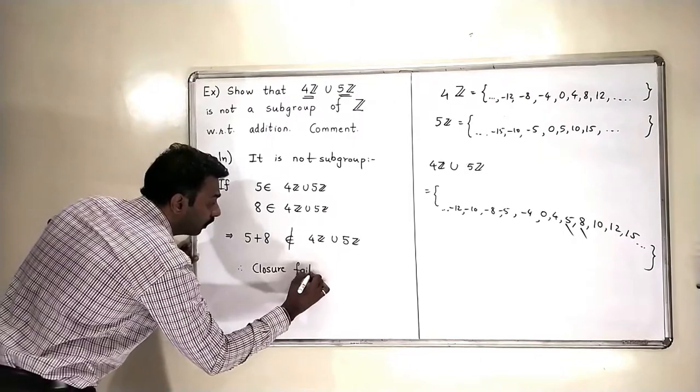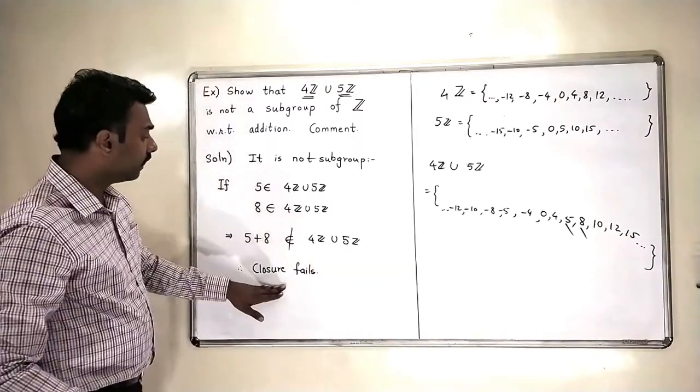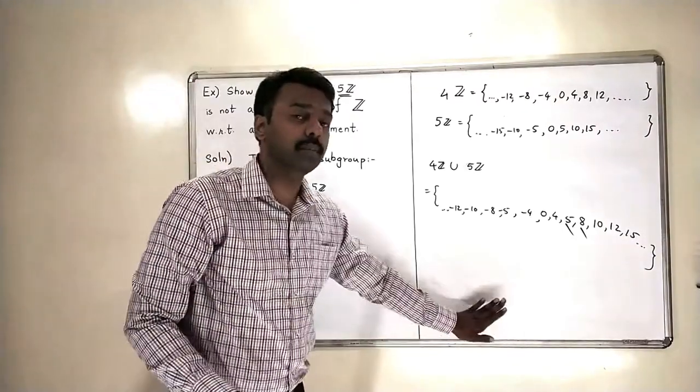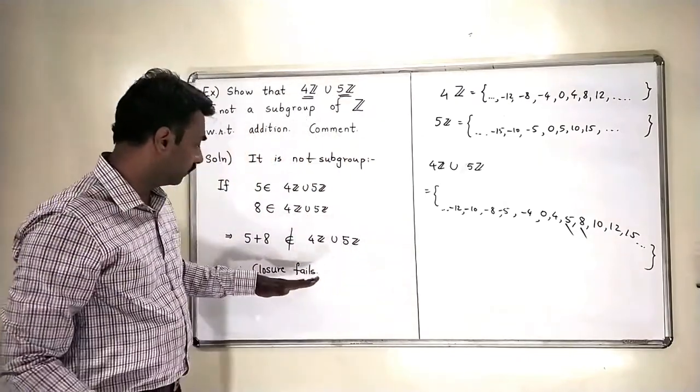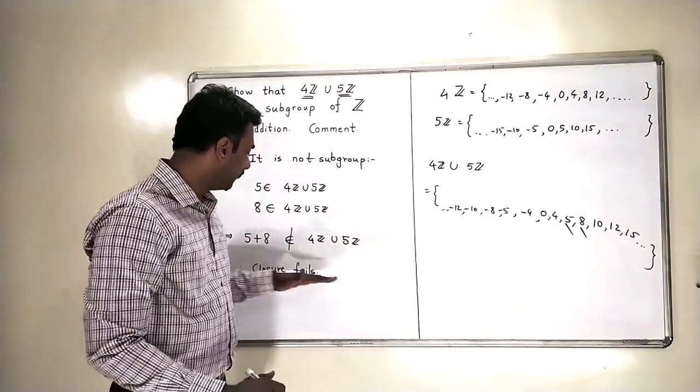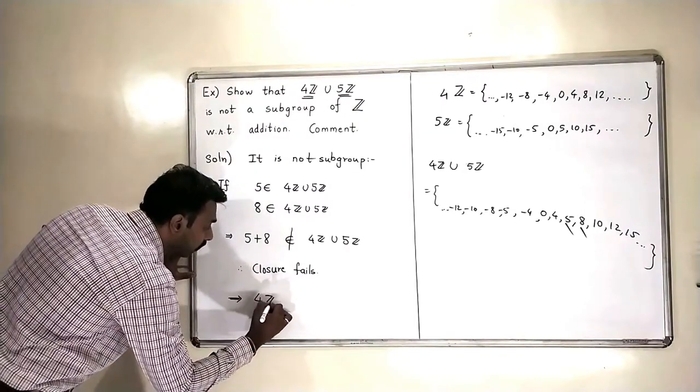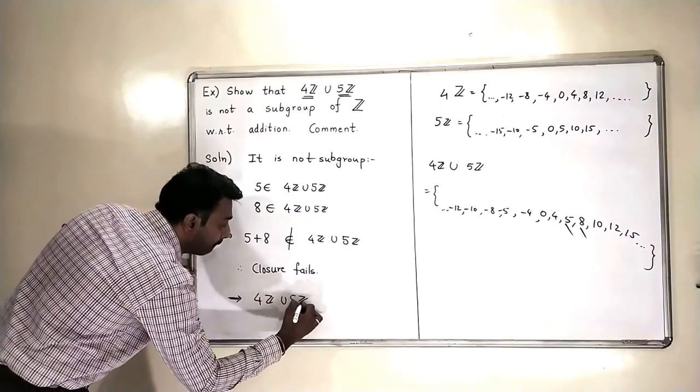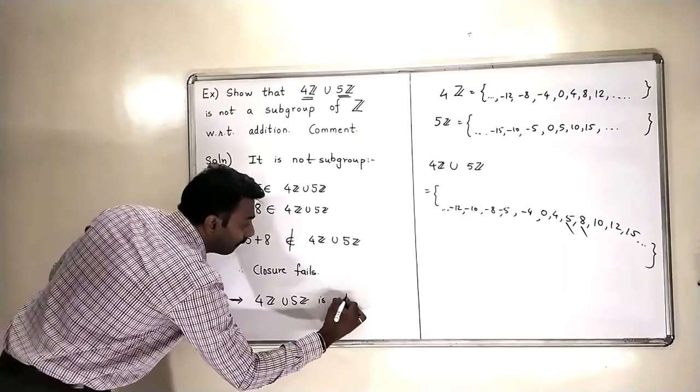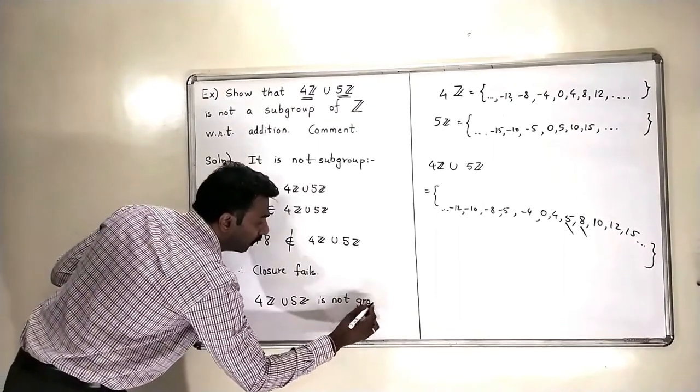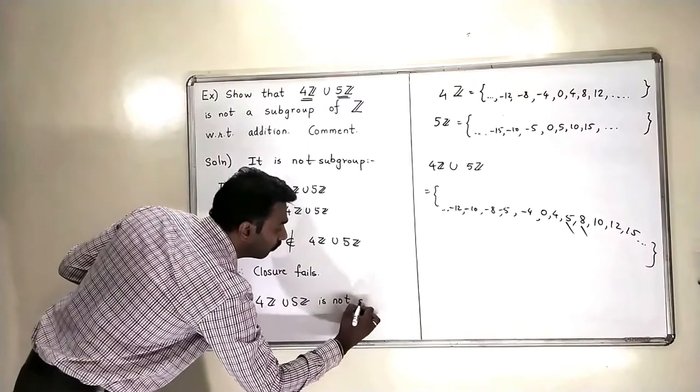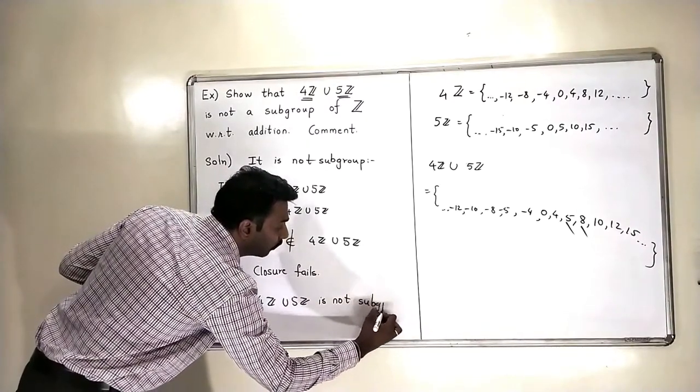The closure axiom does not hold. And therefore I will not check any other properties of this set about group and I will declare that this set 4Z union 5Z is not a group or a subgroup of Z.